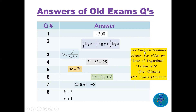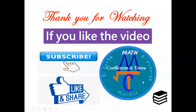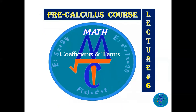The answers are provided for all eight questions. The last one — find log base 2 of 20 in terms of k — has the answer (k+3) over (k+1). If you want to see the complete solutions for all these questions, please see the companion video on laws of logarithms pre-calculus exam questions. Thank you for watching. If you like the video, please subscribe and share it with your friends. This is pre-calculus course lecture number six. I hope to see you in another video.